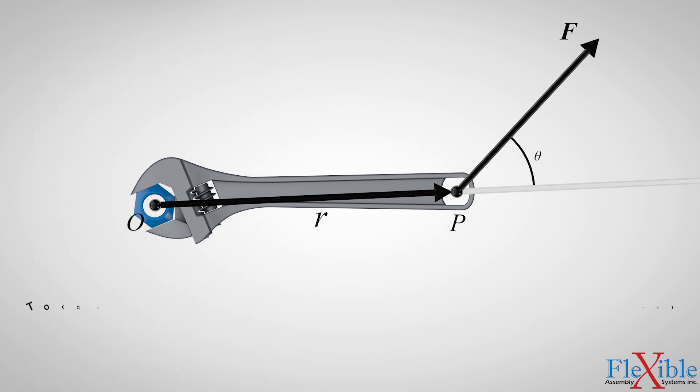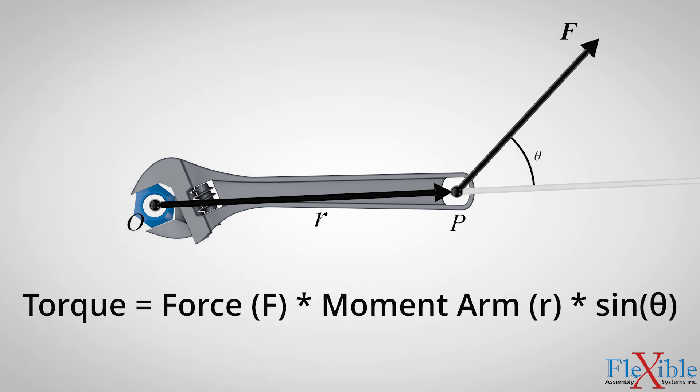This vector combined with the vector from the wrench creates an angle between them which is labeled as theta. The product of multiplying the force, moment arm, sine, and theta together is torque.